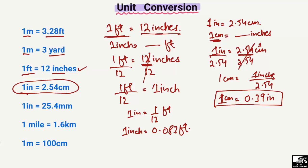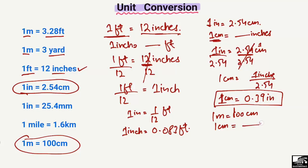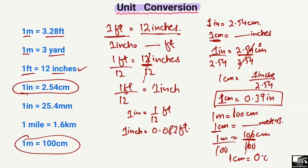Now if we take the example that 1 meter equals 100 centimeters, and we want to find out how many meters are in 1 centimeter: we divide both sides by 100, so 1 centimeter equals 1/100 meter, which is 0.01 meter. This is how we can convert units from one form into another form.